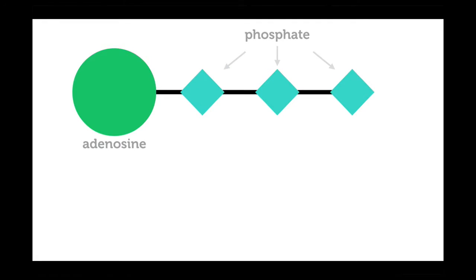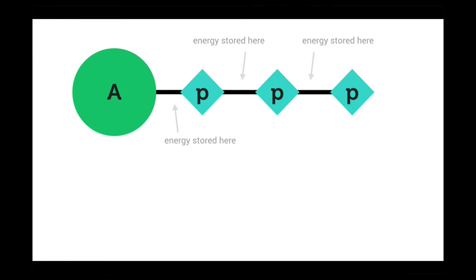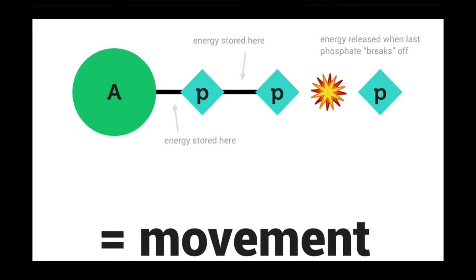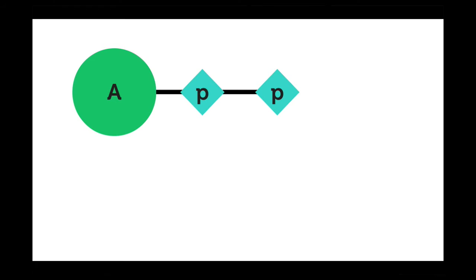Energy is released from chemical compounds into the muscle cells when movement is required. This chemical compound is called adenosine triphosphate, otherwise known as ATP. ATP is made up of two types of molecules: adenosine and three phosphates. The ATP compound stores energy within its bonds, and energy is released when the connection between the last two phosphates is broken. This release of energy makes movement possible. However, now ATP has only two phosphate molecules and is called ADP — adenosine diphosphate — 'di' meaning two.